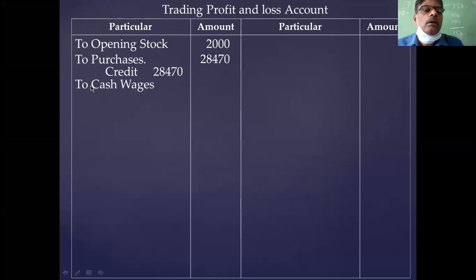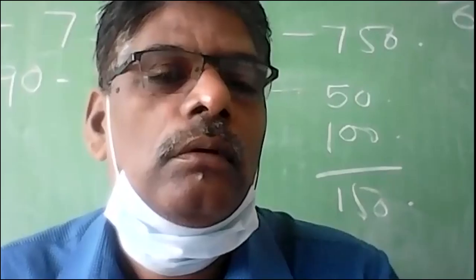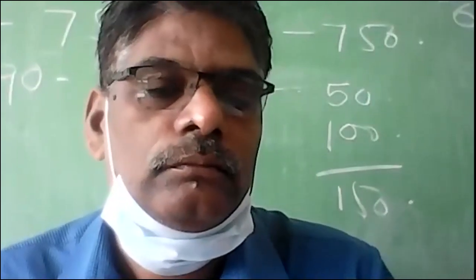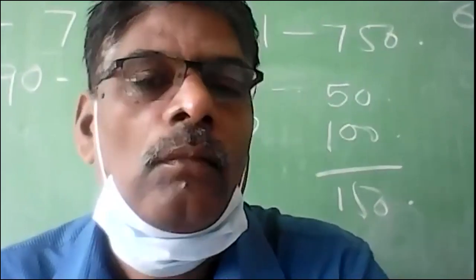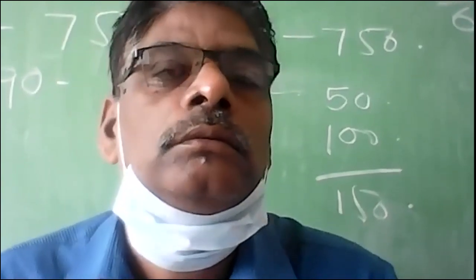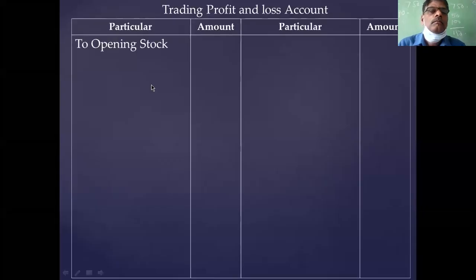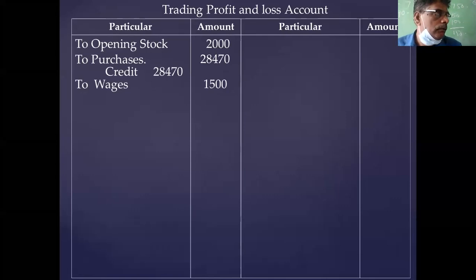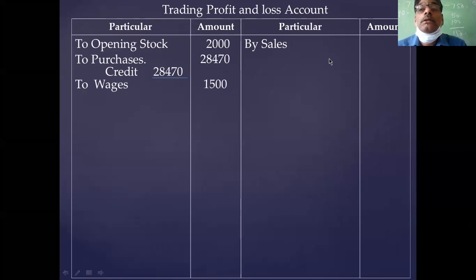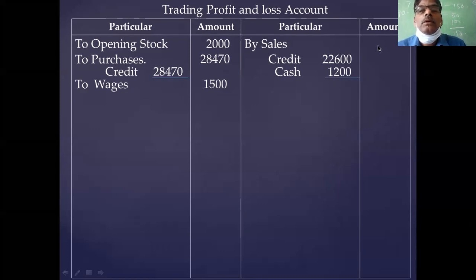Next item is wages — by wages 1,500. Go to the credit side. Buy sales: cash sale is in the cash book; credit sale is in the debtors account. Take both items. Credit sale 22,600 from the debtors account; cash sale 1,200 from the cash book. Total sales is 23,800.